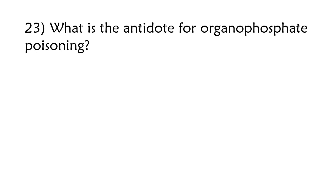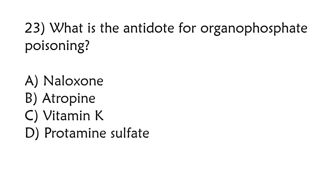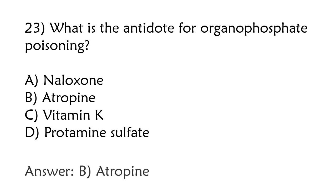What is the antidote for organophosphate poisoning? Naloxone, Atropine, Vitamin K, Protamine Sulphate. The correct answer is Option B: Atropine.